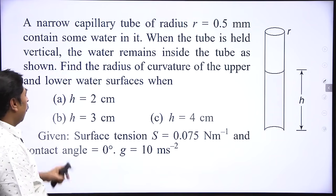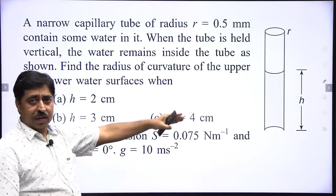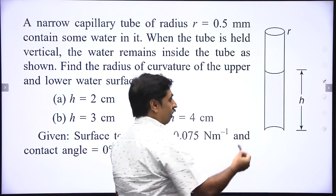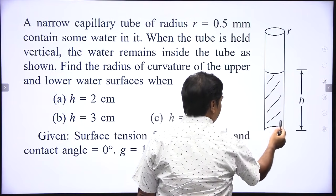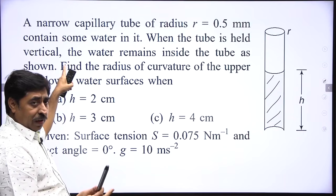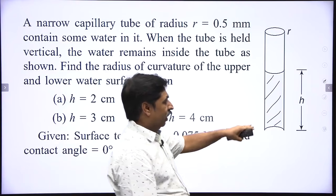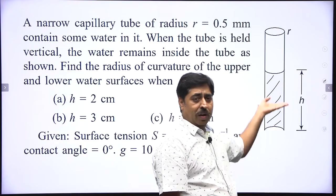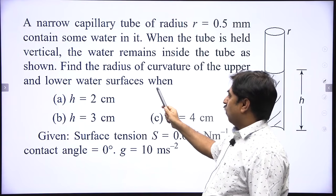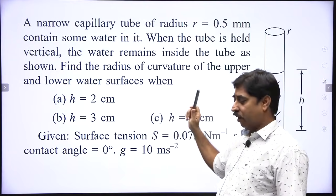The question says: a narrow capillary tube of radius 0.5 mm contains some water in it. The cross-sectional radius is very small — 0.5 mm — and it contains some water in it. When the tube is held vertical, the water remains inside the tube as shown in the figure. The water goes up to height h inside the tube. Find the radius of curvature of the upper and lower water surfaces when the height of water column is 2 cm, 3 cm, and 4 cm.